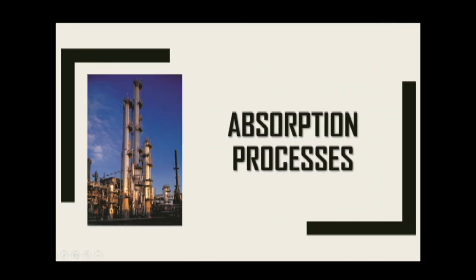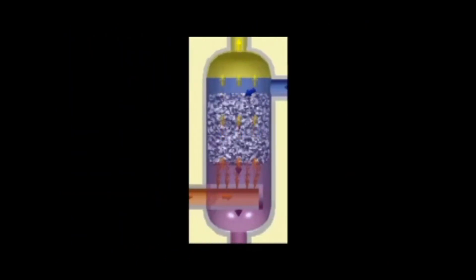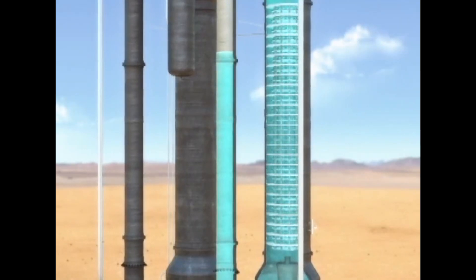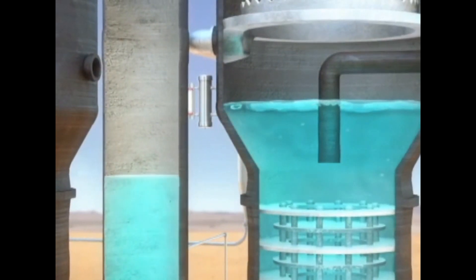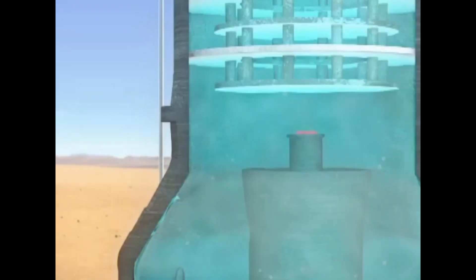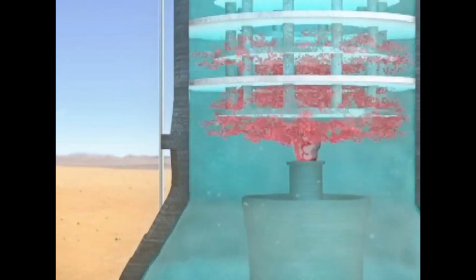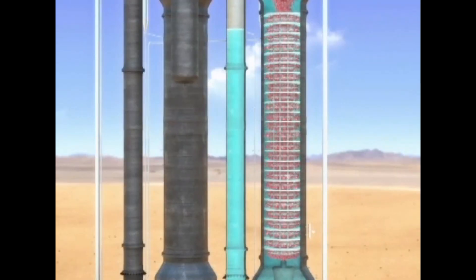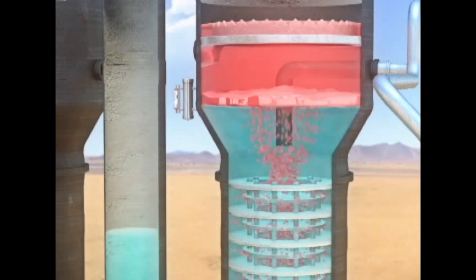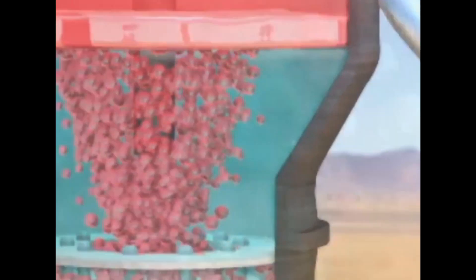Assalamualaikum, my name is Mama Alif. I will continue with the absorption process. Absorption process is a chemical process in which a gas phase is contacted with a liquid phase and separating one or more soluble components which is solute in the gas mixture. Then, transfer a solution into a liquid phase which is solvent. The absorbent gas is then removed from the solvent and the solvent liquid stream is subsequently returned to the system. This process is called stripping.